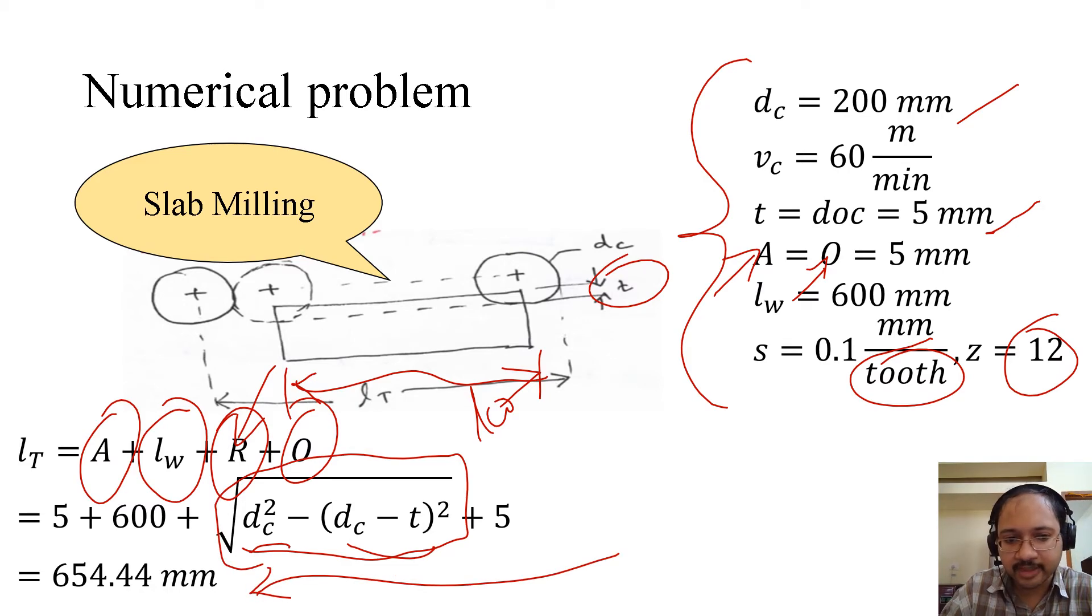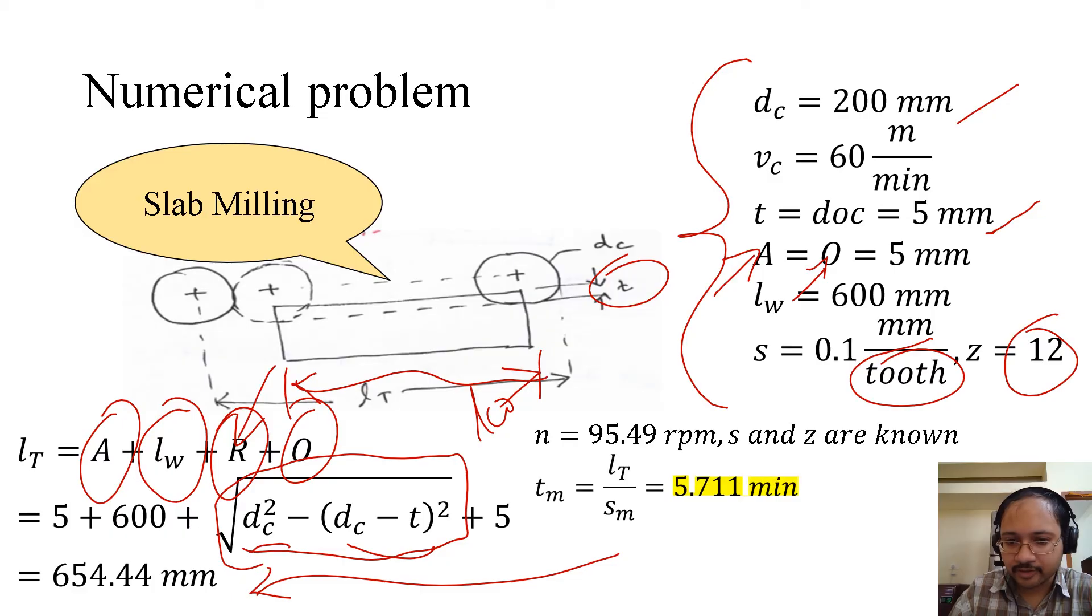This gives 654.44 millimeters as the total travel of the workpiece. So if we want to find out the machining time, n obviously we have seen before how to calculate n if vc is given. S and z are already known, so that gives tm equals to 5.711 minutes.